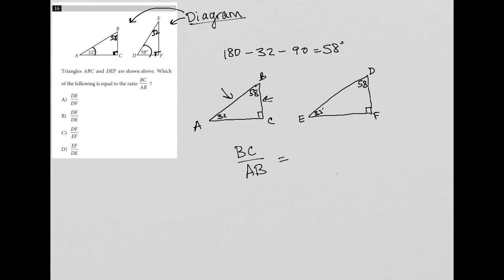So I'm going to say, well, now that they're in the same orientation, BC from triangle ABC is just like DF. Or it's in the same position as DF from triangle DEF. So I'm going to call this DF. And then AB, the hypotenuse of this right triangle, is in the same position as DE, the hypotenuse of this triangle, so DE.